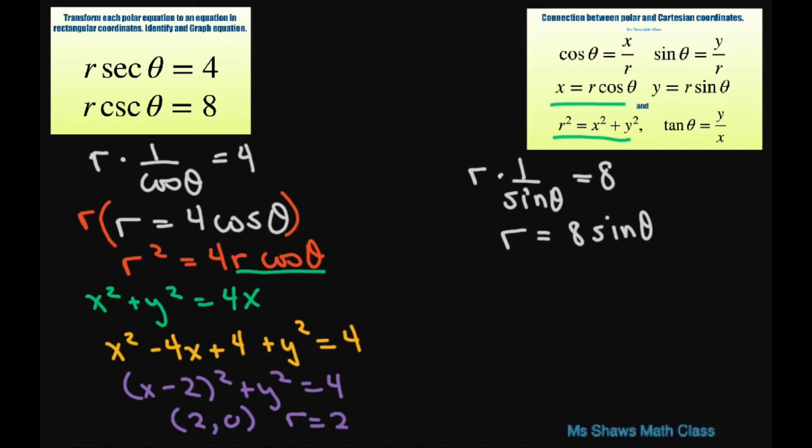Alright, for this one we do the same thing. Multiply everything through by r. You're going to get r squared equals 8r sine of theta. So this is going to give you x squared plus y squared equals 8y for your r sine of theta.